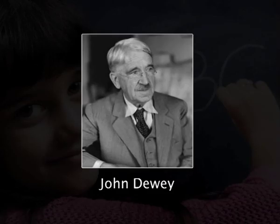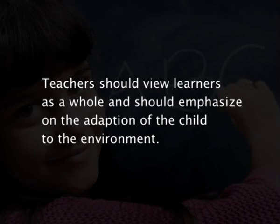A second major figure in the field of educational psychology is John Dewey. He was the first educational psychologist who looked at learners as active participants in the classroom. The major principle was that teachers should view learners as a whole and emphasize adaptation of the child to the environment — that is, learners should not just be taught subject matter but should be trained to think and to adapt themselves to the environment around them.